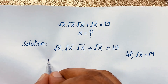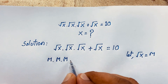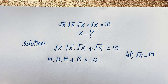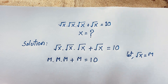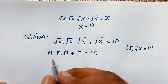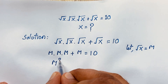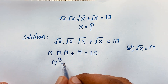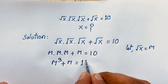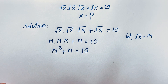We let square root x equal m. So you can see this expression becomes m times m times m, plus m, is equal to 10. I put this substitution in — square root x equals m. Now m times m times m is m to the power 3, so m³ + m = 10. We'll find a nice cubic equation.